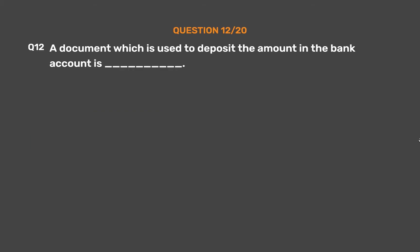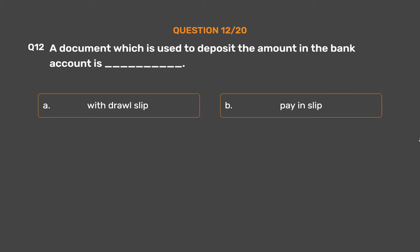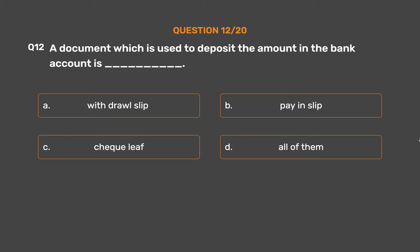Question number twelve: a document which is used to deposit the amount in a bank account is — Option A: withdrawal slip. Option B: pay-in slip. Option C: cheque leaf. Option D: all of them.